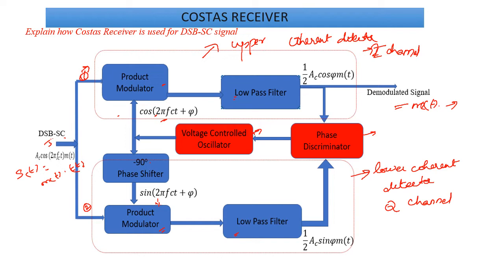The output of the upper product modulator, V1(t), is equal to S(t)·cos(2πf_c·t + φ). This product of both signals is the output of your product modulator. The output of the product modulator is given to a low pass filter. The product modulator output contains both high frequency and low frequency components; after filtering, it retains only your low frequency signal.